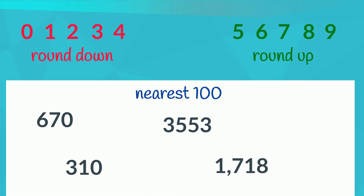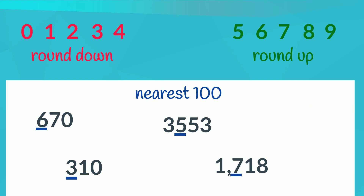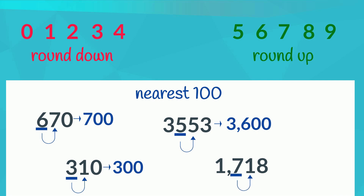Try rounding the following numbers to the nearest 100 by yourself. Remember to start by finding the hundreds place, and then looking to the digit to its right to decide if the number rounds up or down. Pause here while you work. Here is the hundreds place in each number. Now to decide whether each number will round up or down, we must look to the digit in the place value to the right — the tens. 7 rounds up, so 670 rounds up to 700. 1 rounds down, so 310 rounds down to 300. 5 rounds up, so 3,553 rounds up to 3,600. 1 rounds down, so 1,718 rounds down to 1,700.